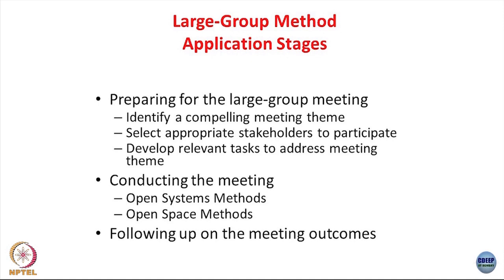Large group interventions require very sound preparation. All instructions must be clear, the agenda must be clear, and communication must be clear. Preparation involves identifying a compelling meeting theme — if the theme is not compelling, people will not be motivated to participate. It also requires selection of appropriate stakeholders; if critical stakeholders are missing, these interventions will not be successful. Equally important is the development of relevant tasks to address the themes and converting ideas into action planning — that is where managerial skill comes in. These three things are essential for any large group intervention to be successful.